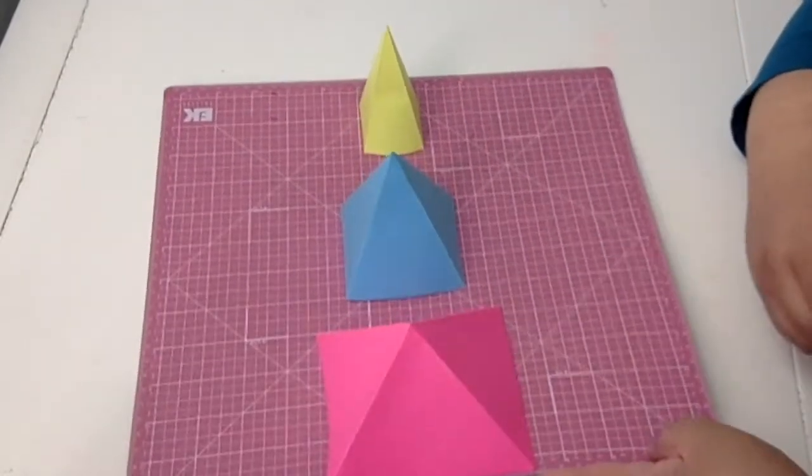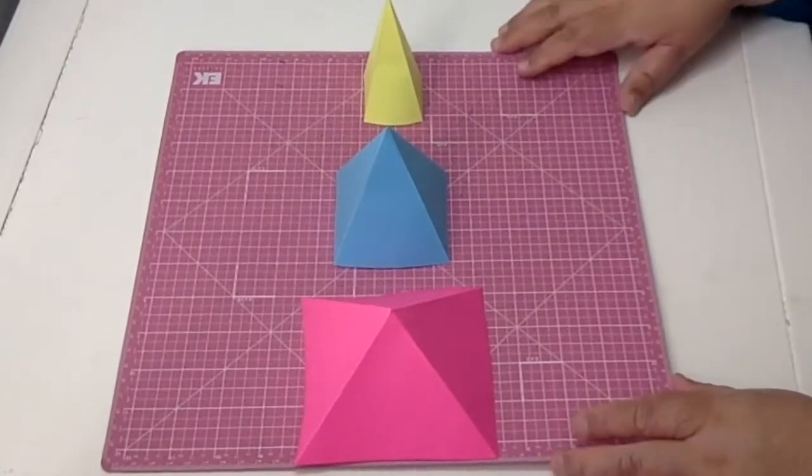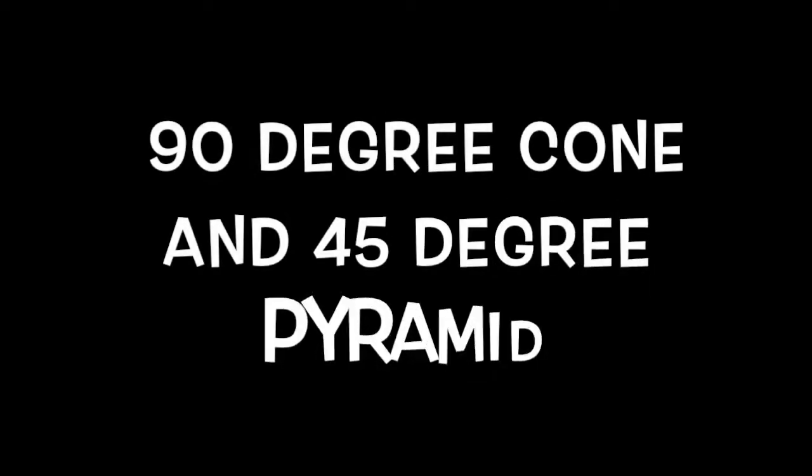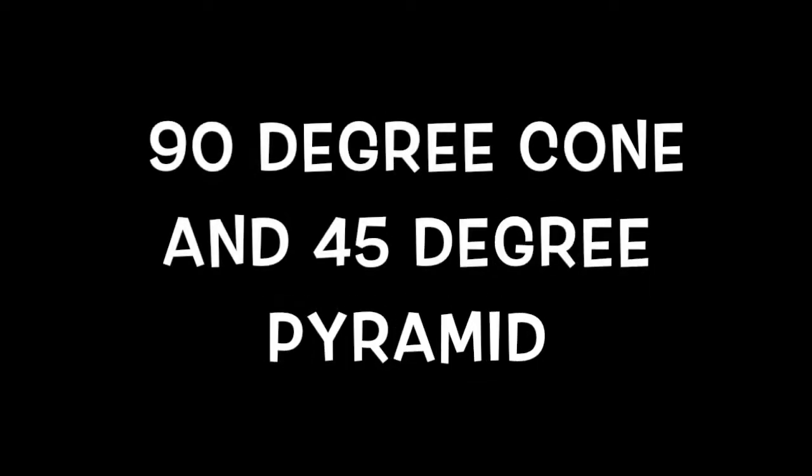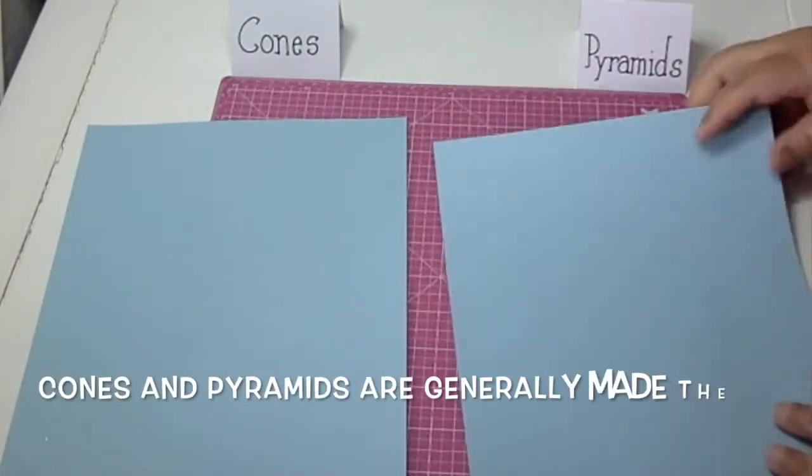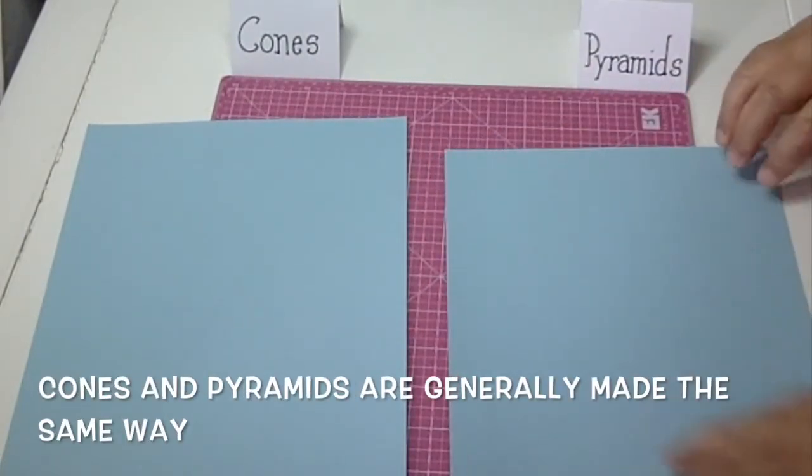Okay, that's enough about the technical stuff. Let's just start crafting. My voice is giving out. Since these two shapes have very similar properties, they are basically made the same way, so I'll do a 90 degree cone.